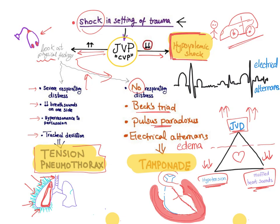Pulsus paradoxus occurs in cardiac tamponade when blood surrounding the pericardium compresses the right ventricle — the lower pressure ventricle — which then pushes on the septum and compresses the left ventricle, reducing aortic output. On inspiration, you create more negative intrathoracic pressure, shifting more blood into the right side, which further pushes the interventricular septum leftward, reducing left ventricular output through the aorta.